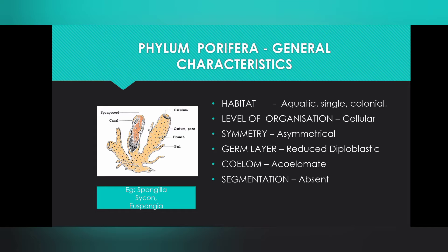We are going to learn their general characters and typical characters. General characters: habit and habitat. They are aquatic, single, colonial. Mainly they live in sedentary form.